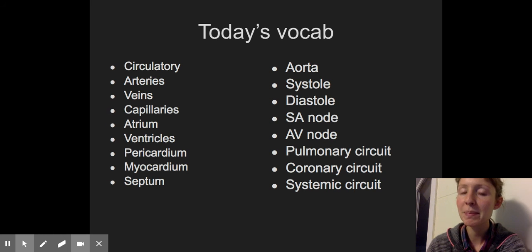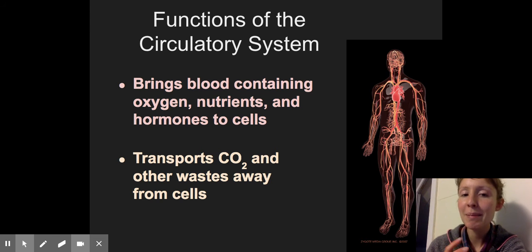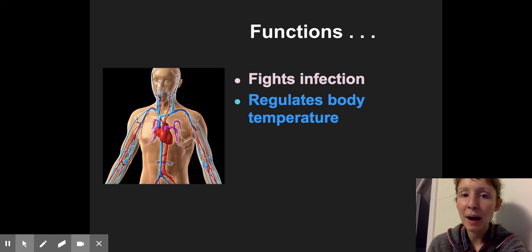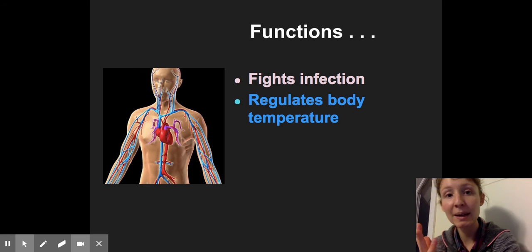The number one function being transport. So it is our main transport system, kind of like a network of highways in the body. It's transporting the blood that contains the oxygen and nutrients and hormones that the cells need. It also transports the carbon dioxide and urea and other wastes away from the cells. Now, that's not its only function though. It also helps fight infection because those blood cells of the white blood cells help target pathogens. And it also helps regulate body temperature by controlling where the blood is flowing in the body. It can help minimize heat loss or maximize heat loss.